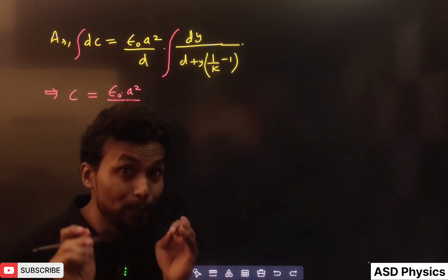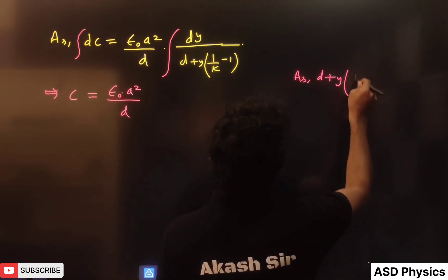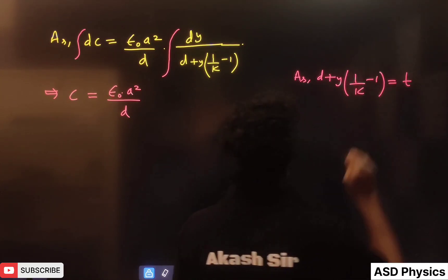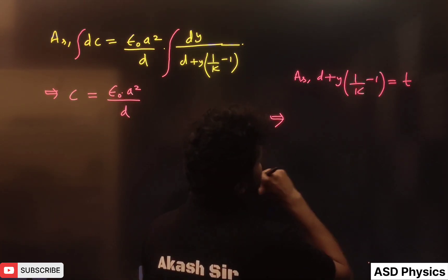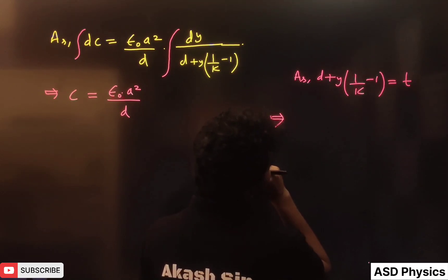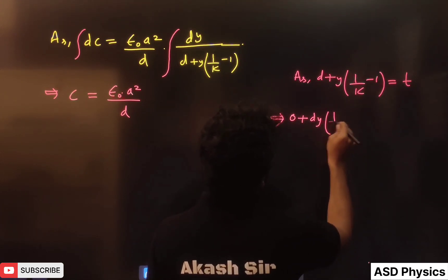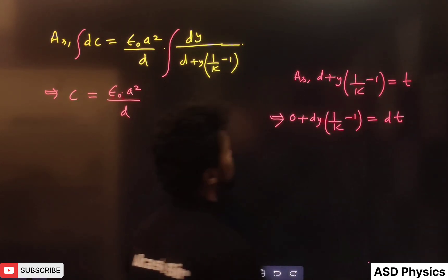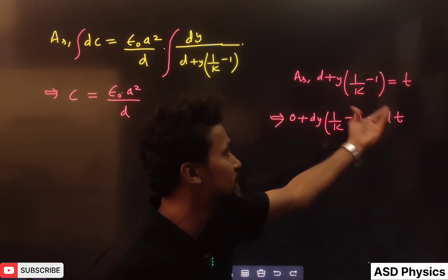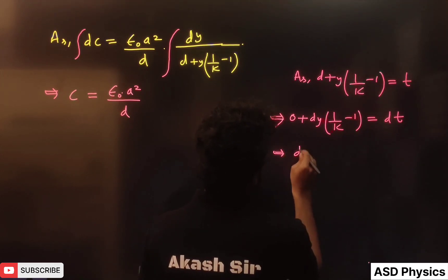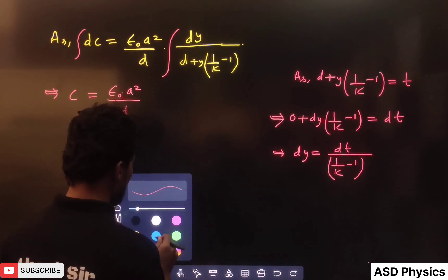To solve this integration, let t = d + y·(1/k − 1). Differentiating both sides: dt = (1/k − 1)·dy. Therefore dy = dt / (1/k − 1). Substituting dy and t: C = (ε₀·a²) / [(k−1)·d] · ∫ dt/t.